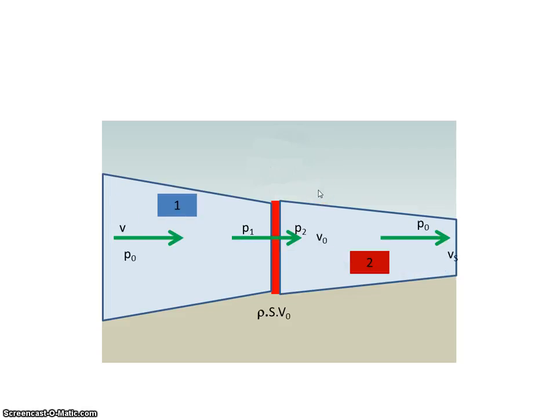So let's label the areas. Let's call the free stream velocity v with a pressure of p₀. And let's say the pressure right in front of the disk is p₁ and the pressure behind the propeller disk is p₂, and the velocity just as it's going through it is v₀.